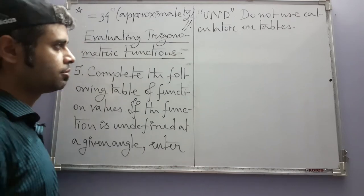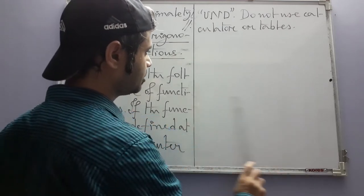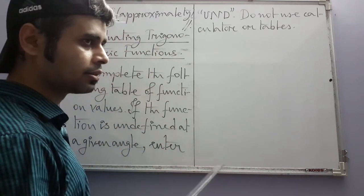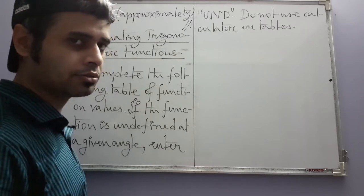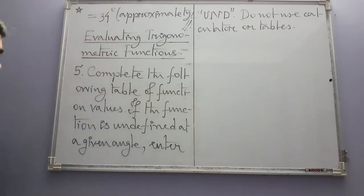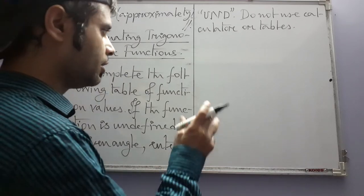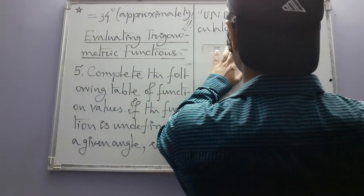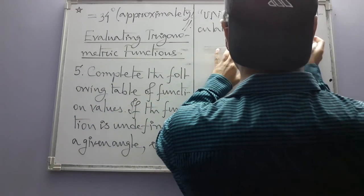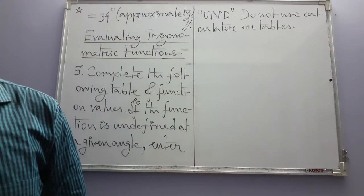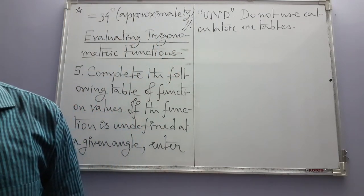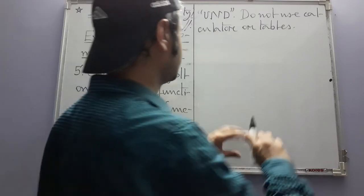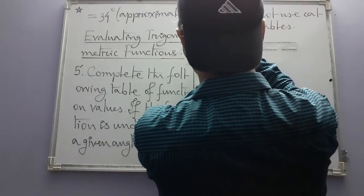The table has 7 rows and 6 columns. The columns are for the functions: sin θ, cos θ, tan θ, cot θ, sec θ, and csc θ.